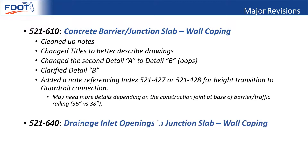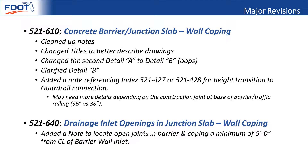For junction slabs at the inlet drain entry openings, we added a note: you should not have an open joint in the barrier made within five feet of the centerline of the inlet. We want that to be a continuous section in case it is impacted — continuity is key since it doesn't have the junction slab as a counterweight.